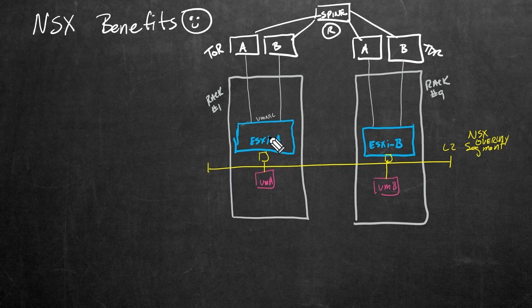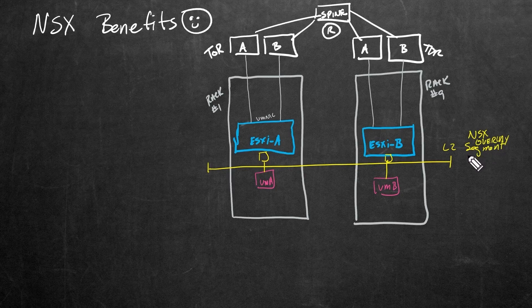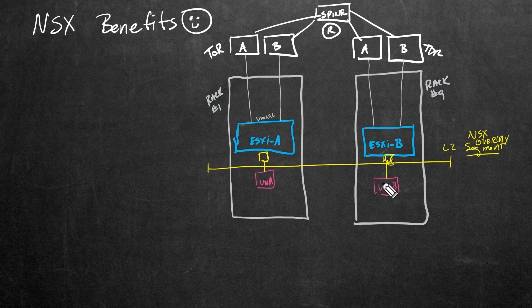Even though ESXi A and ESXi B do not have the same layer-two VLAN connectivity, if we implement a layer-two NSX overlay segment — think of it like a VLAN, because it really is a layer-two broadcast domain — that segment will show up like a port group on each of our distributed switches. We connect VM A to it, we connect VM B to it, and those two VMs are logically connected to the same layer-two broadcast domain.